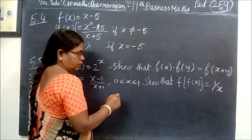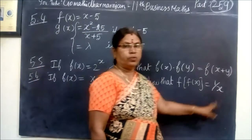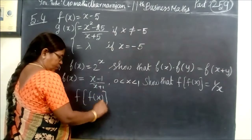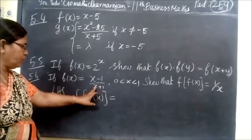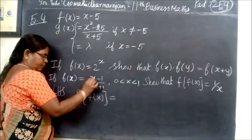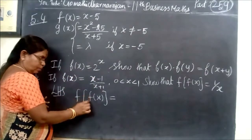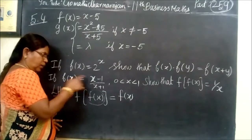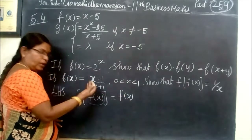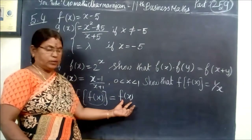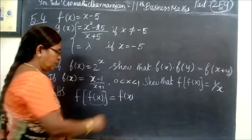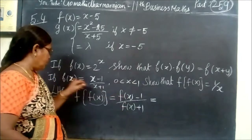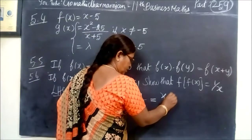We are given f(x), where 0 is less than x, less than 1. We need to show that f(f(x)) is equal to 1 by x. Now we consider the LHS. f(x) is equal to x minus 1 by x plus 1.